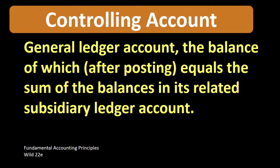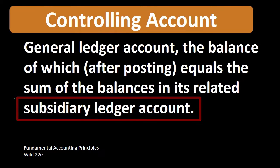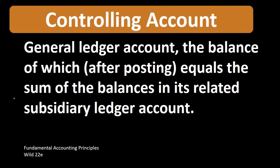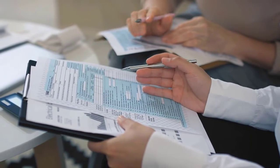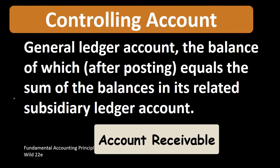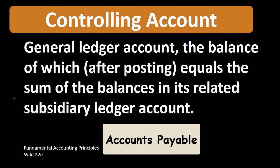When we think of a controlling account, we usually think of it in relation to a subsidiary account. A subsidiary account is added up by certain characteristics, and that account is something we want to check against the controlling account — it should match. We can think of this in terms of accounts receivable and accounts payable.